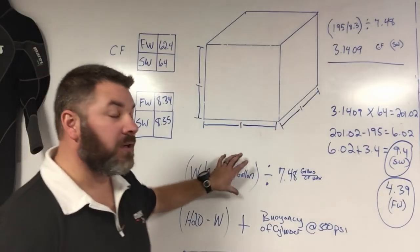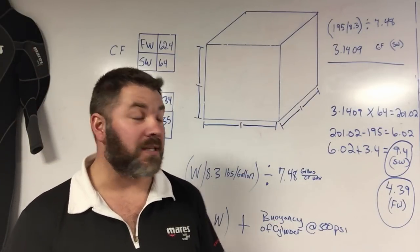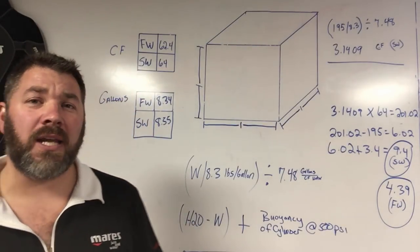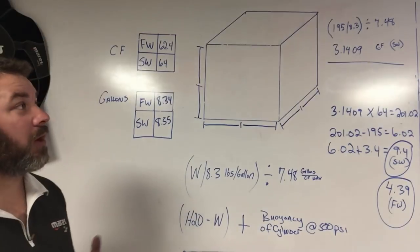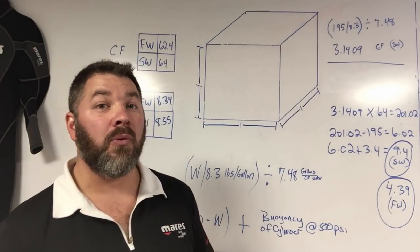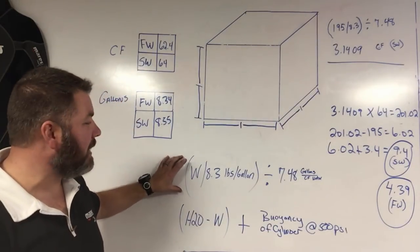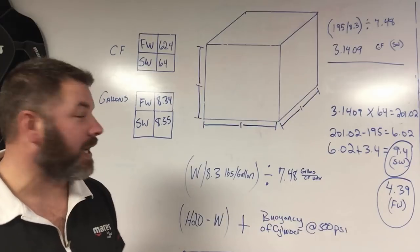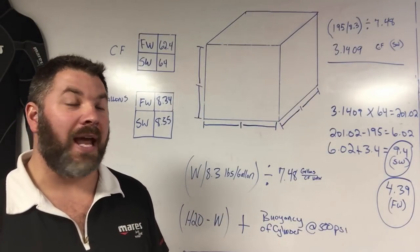The first thing we need to determine is how much cubic foot of water do we actually displace. This is actually a very easy formula to do with some given variables. The first variable we're going to talk about is the density of the average human being, which actually comes in at 8.3 pounds per gallon. So if I take my weight and divide it by that 8.3 pounds per gallon, that's going to give me a number.